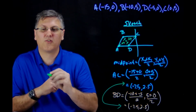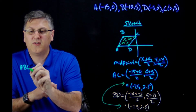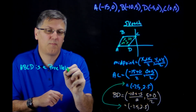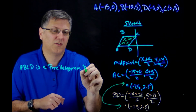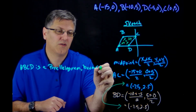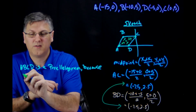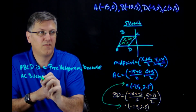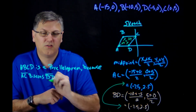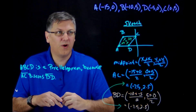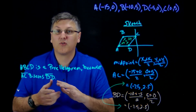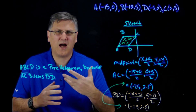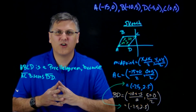We can say ABCD is a parallelogram because the diagonals AC and BD bisect each other. That's a pretty straightforward, easy way to check if something is a parallelogram. Now in class, we're going to do things with the distance formula and slope formula — a variety of different options for testing these. You'll see pretty much all five versions.